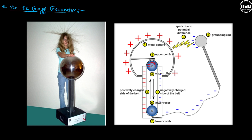In this lecture we are going to study about the Van de Graaff generator. This is a simple setup of the Van de Graaff generator, and you must have seen photos or videos where someone touches this conductive spherical shell and their hairs stand up. You can also see this kind of setup in the physics lab.